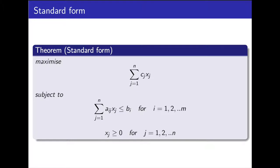Looking at the middle section, this describes the constraints the objective function is subject to. We have the sum from j equals 1 to n — so again, this is for all variables xj — and we also have the introduction of i equals 1 to m. Here, m is the number of inequality constraints. Looking at bi, bi is the value of the ith constraint. And aij refers to the coefficient of variable xj in constraint i. Overall, we have that the sum of products aij times xj, for j equals 1 to n, is less than or equal to bi, for i equals 1 to m, the number of constraints.